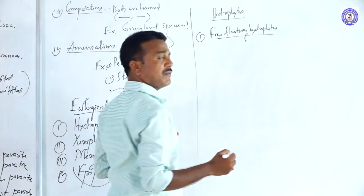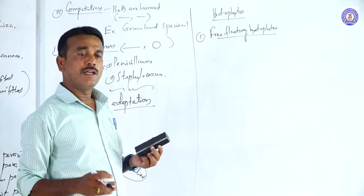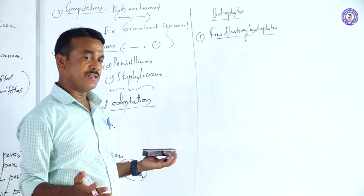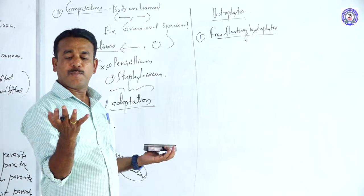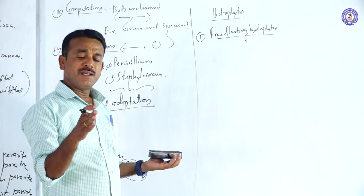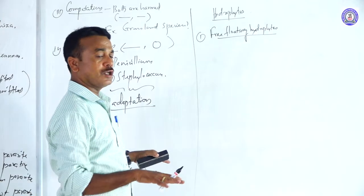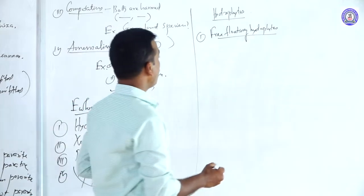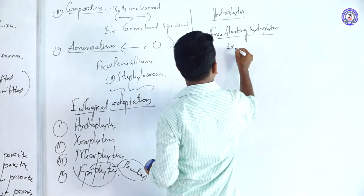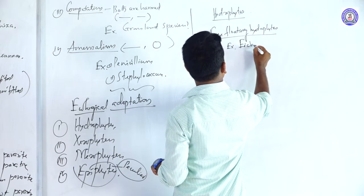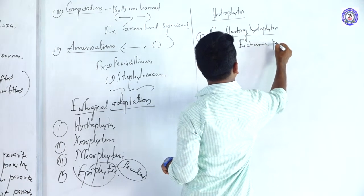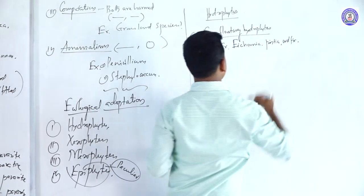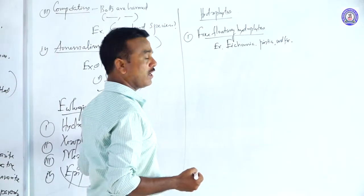Free-floating hydrophytes: the leaves freely occur on the surface of water bodies. Plants whose leaves occur on the surface of water fall into the category of free-floating hydrophytes. Examples of free-floating hydrophytes include Eichhornia, Pistia, and Wolffia.